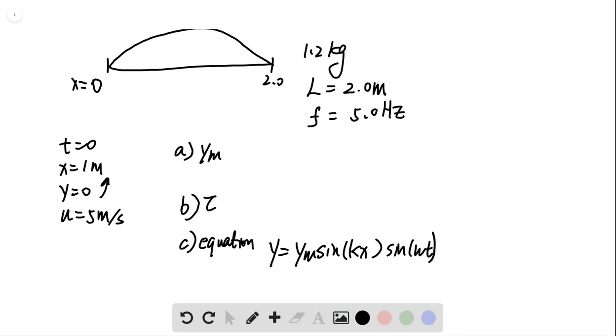And then it also has a speed u, take the derivative of y and you'll get omega times ym sin kx cosine omega t. So it also has this maximum speed of omega times ym when the sine cosine part equals 1.